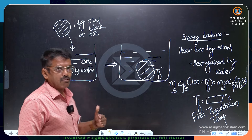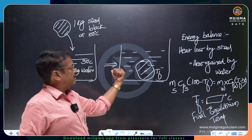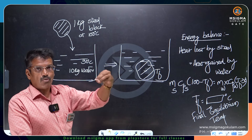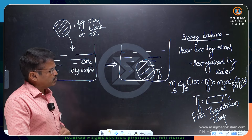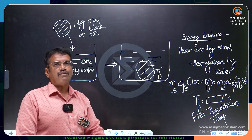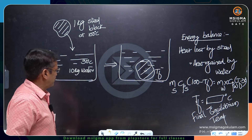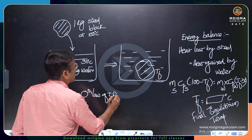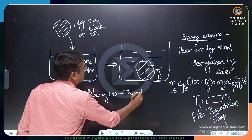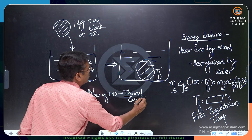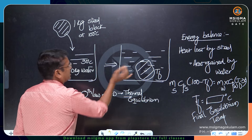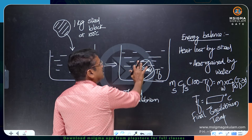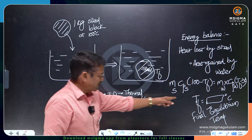All three laws of thermodynamics are observed in this problem. The zeroth law of thermodynamics gives the thermal equilibrium concept: when two bodies are in thermal equilibrium, their temperatures are equal. Here the steel block and the water are in thermal equilibrium, so their temperatures are equal — we calculated Tf. The first law of thermodynamics is the law of conservation of energy: energy can neither be created nor destroyed. That is the energy balance — heat lost by steel equals heat gained by water.